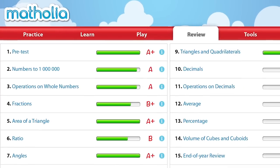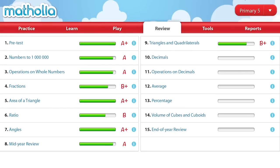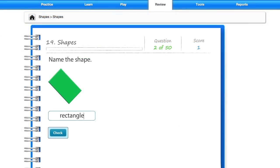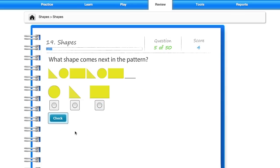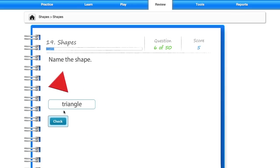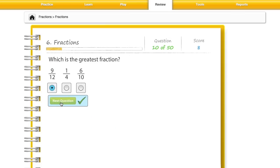The Matholia online portal includes comprehensive review modules for continual assessment. Key features include pre-tests from primary 1 to primary 6.